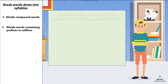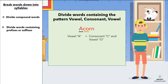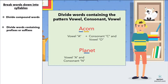If you come across a word that contains the pattern vowel, consonant, vowel, divide it into syllables by separating the first vowel from the following letters. For example, 'acorn' would be divided as 'a-corn.' But what if you do that and it sounds wrong or it doesn't make sense? Then divide the word after the consonant. For example, 'planet' would be divided as 'plan-et.'